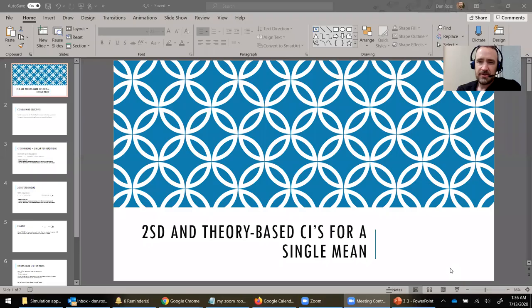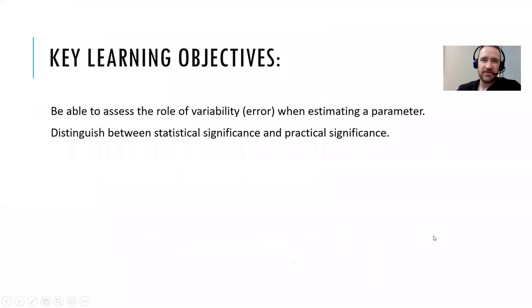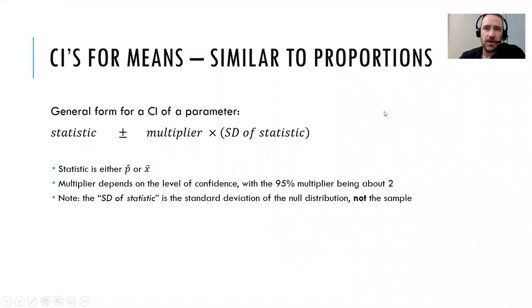Hello, in this video we're talking about confidence intervals for a single mean. Let's take a look at a few notes here. The 2SD and theory-based confidence intervals for a single mean. We've got a couple of key learning objectives. We want to be able to assess the role of variability or error when estimating a parameter, and we also want to be able to distinguish between statistical significance and practical significance.